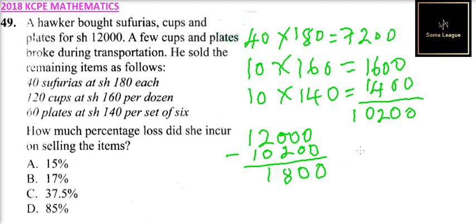So you get the percentage of this out of 12,000. So it is 1,800 over 12,000 and you multiply by 100. So to get the percentage, which when you simplify, you can simplify that by dividing by 600. You'll be able to get 15%.